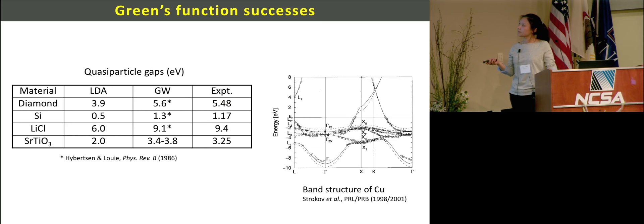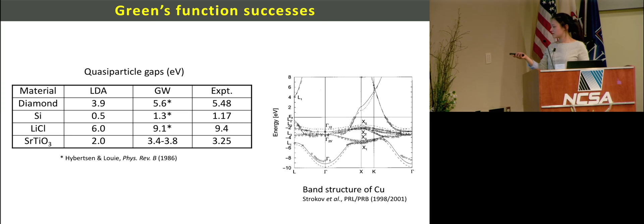I'm going to show you the success of the Green's function. I tabulated LDA and experiment in previous slide, and now added this GW. As you can see here, GW improves a lot in terms of the particle gaps, which is good. The GW method can be used for some materials like copper, which is not an insulator. These dots are from experiment and these lines from GW calculation, so you can even apply this method to metals as well.